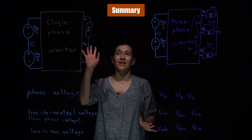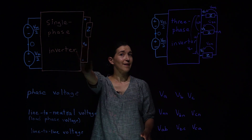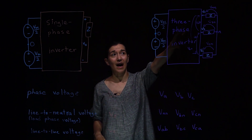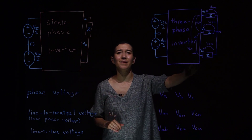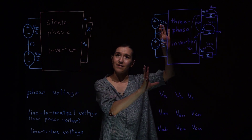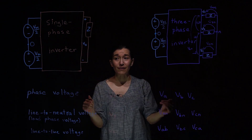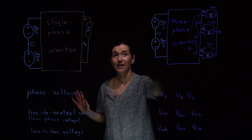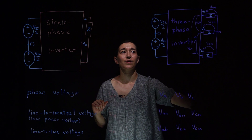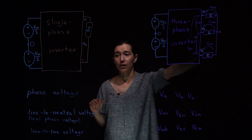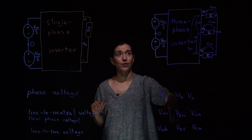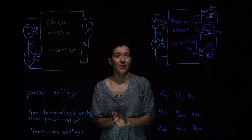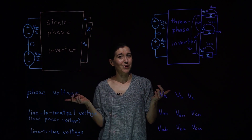To summarize: the single-phase inverter has one AC output; the three-phase inverter has three AC outputs that are generally equally phase-shifted. Because the three-phase inverter has many different parts, we break down definitions as phase voltage (relative to the input-side ground), line-to-neutral voltage (relative to the neutral point in the load), and line-to-line voltage (relative to the three terminals coming out of the three-phase inverter). Don't forget these definitions — we'll use them in the future.